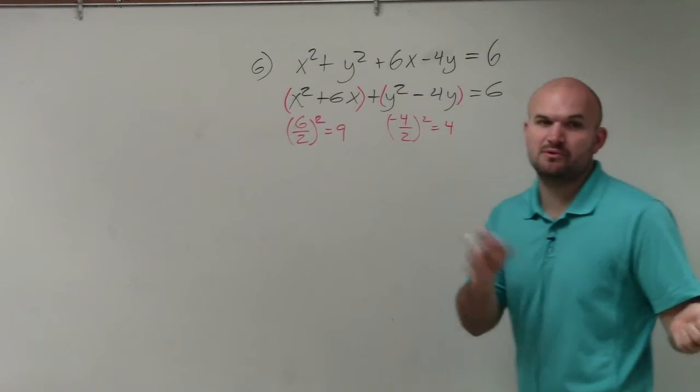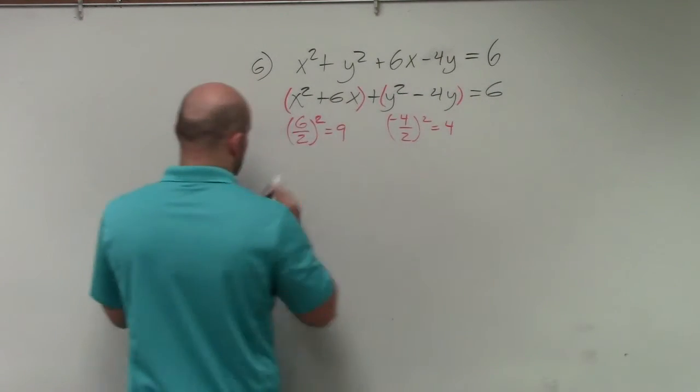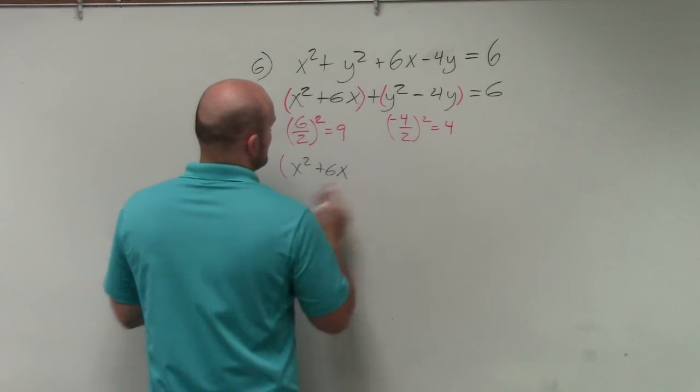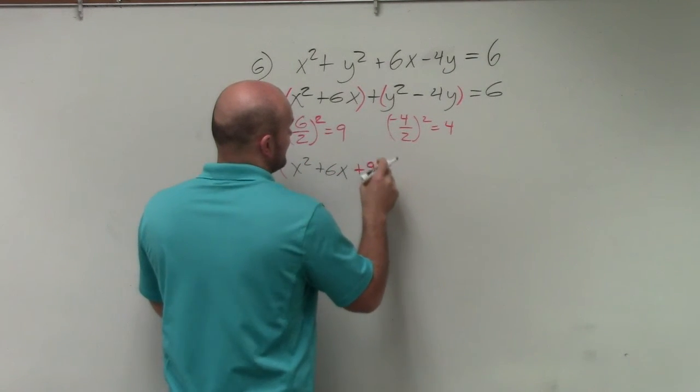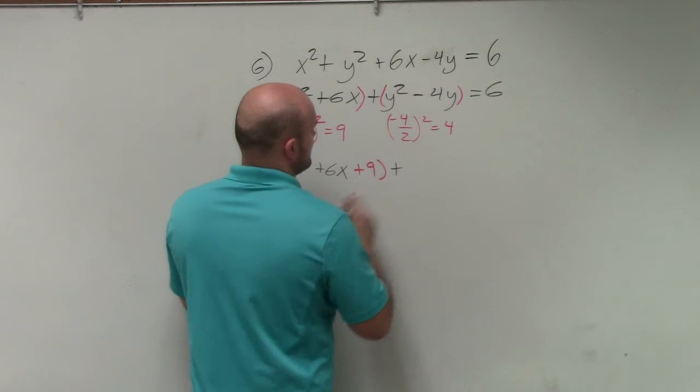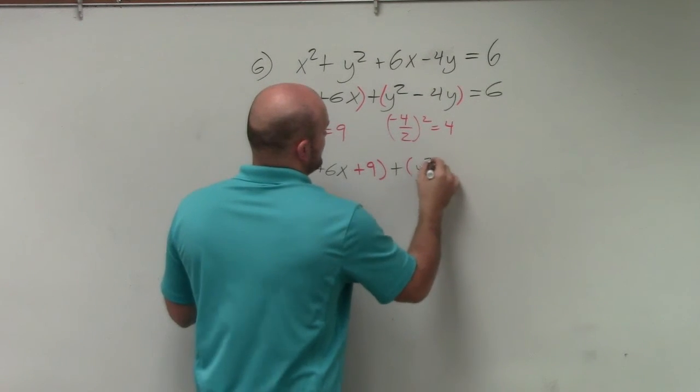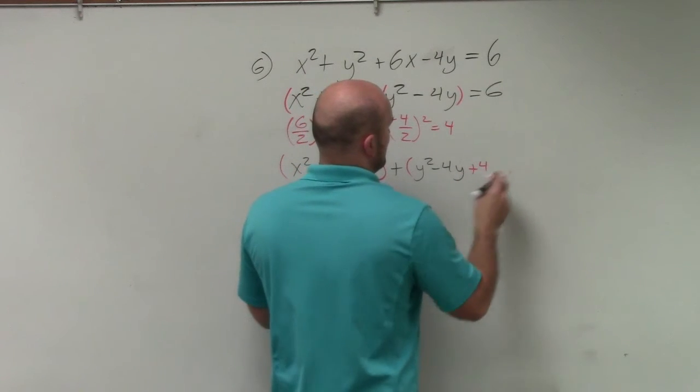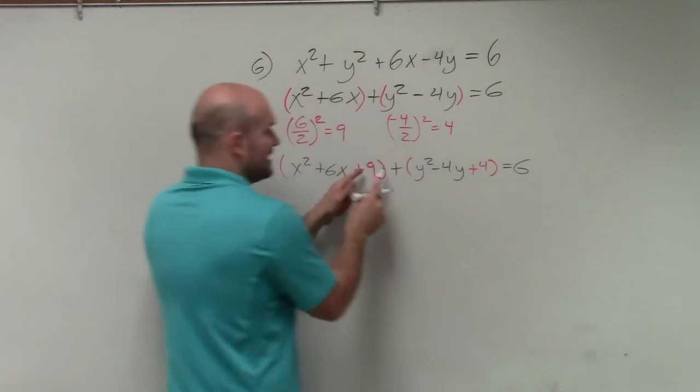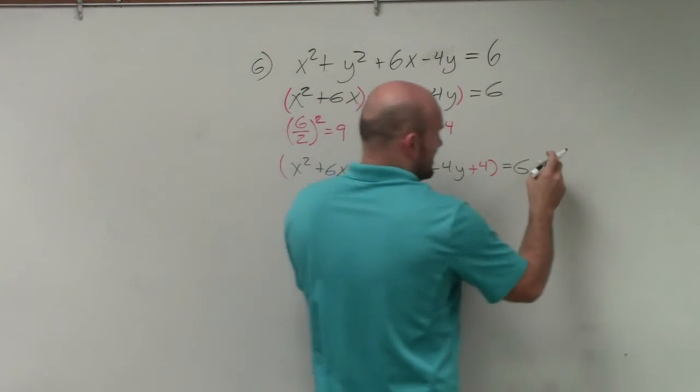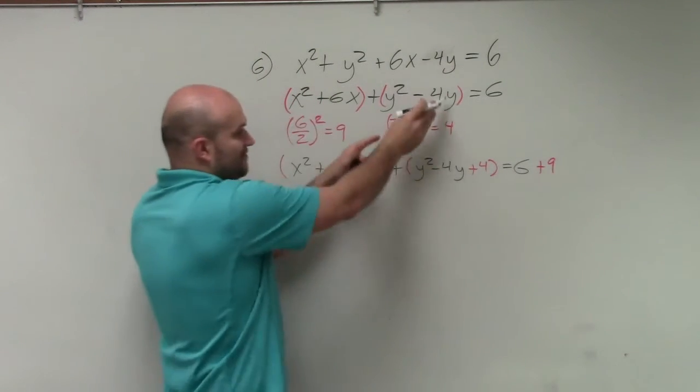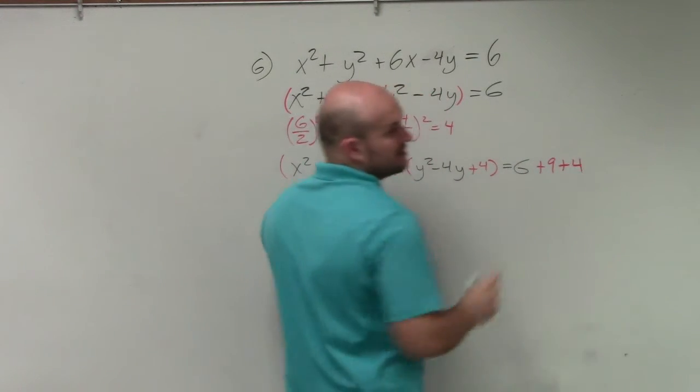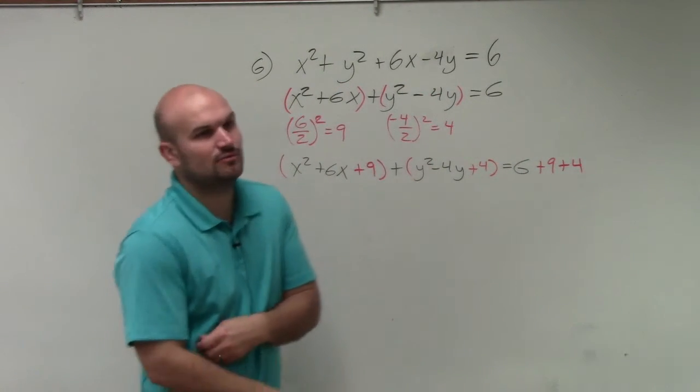But since we're adding them to one side, we want to make sure we add them to the other side as well. So now I have x squared plus 6x plus 9 plus y squared minus 4y plus 4 equals 6. Again, since I added 9 over here, I have to add 9 over here. Since I added 4 over here, I have to add 4 over here. Does everybody see mathematically what I did?